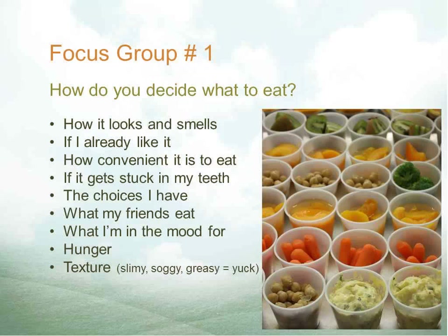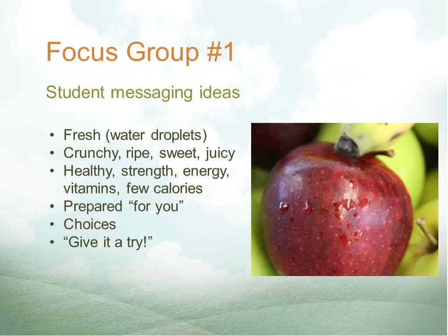We also held focus groups at Shaw Middle School to get an idea of what students are thinking and their attitudes. In our first focus group we had eight leadership students and wanted to assess student attitudes towards the fruits and vegetables available in the cafeteria. We asked them how they decide what they eat, and a few things stood out — how important texture is to them, and they are concerned about how something like broccoli can get stuck in their teeth. We also asked for messaging ideas to promote fruits and veggies, and they came up with things like water droplets, that appealing visual cue from recently sprayed grocery store produce. The cafeteria staff now spray the apples with water before setting them out.